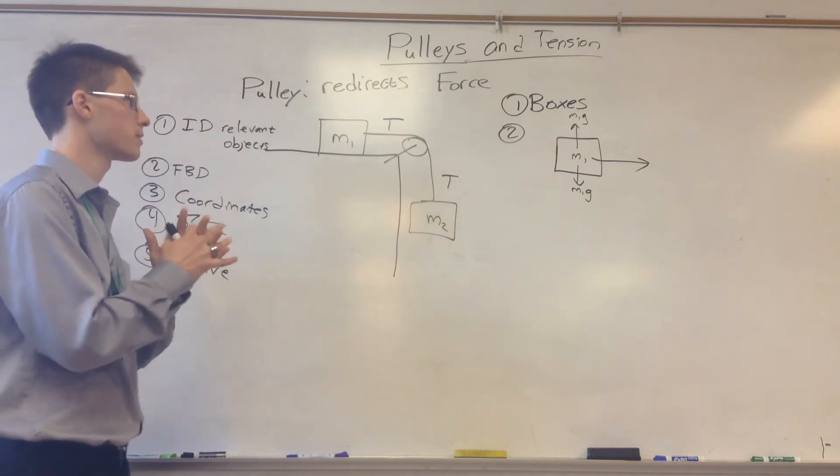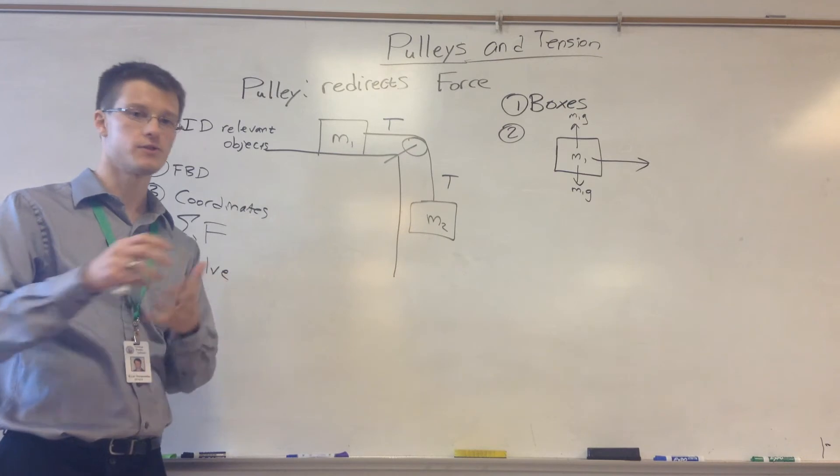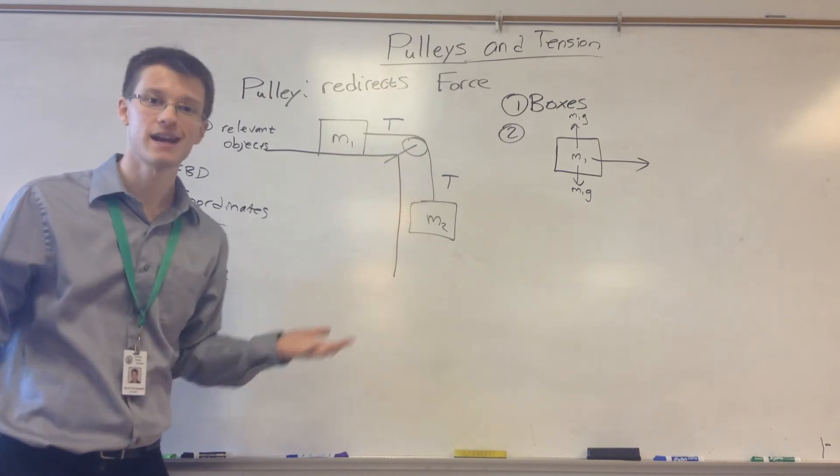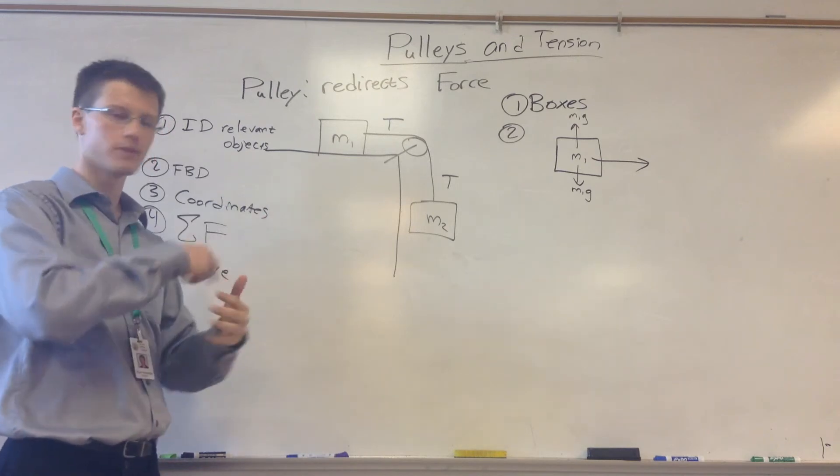For the purposes of all this, we're going to assume that tension is uniform throughout the rope, and that our rope itself has uniform mass. More accurately, it has zero mass. So tension is the same throughout the entire rope.